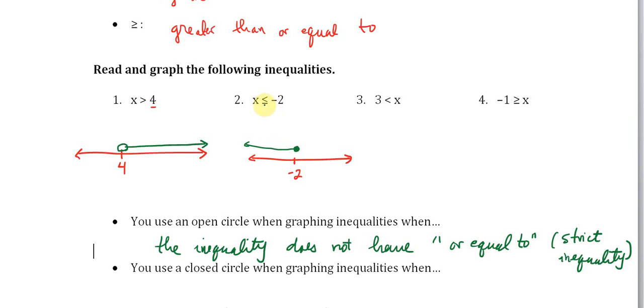We use a closed circle when graphing inequalities when the inequality has the phrase 'or equal to.' X is less than or equal to—it's the 'or equal to' here that fills in the dot.